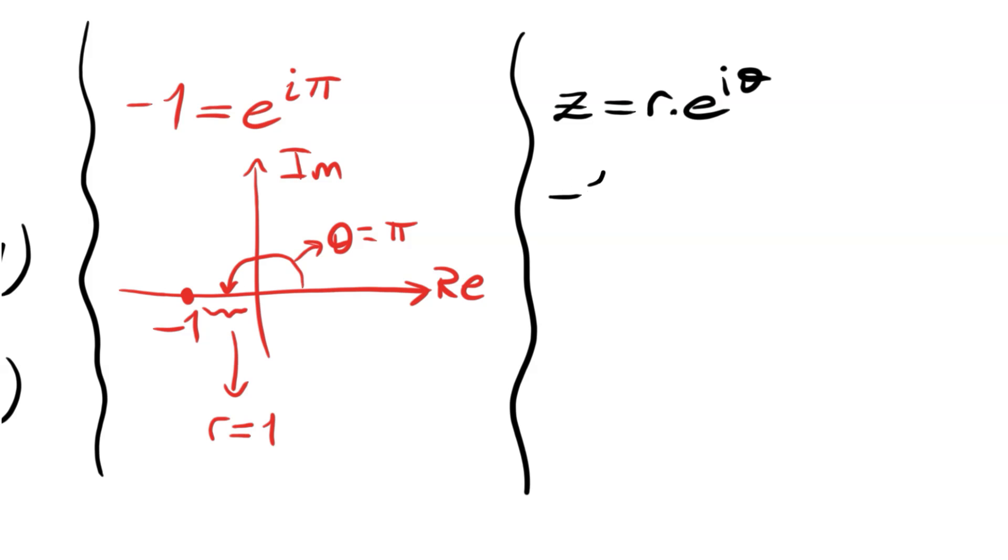Here r is 1 and theta is π, so negative 1 is equal to e^(iπ). As I said, the principal value is this one.